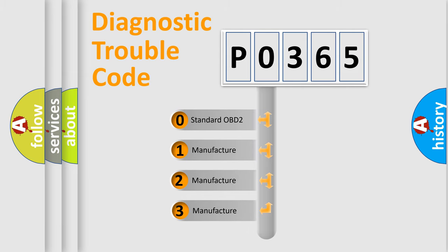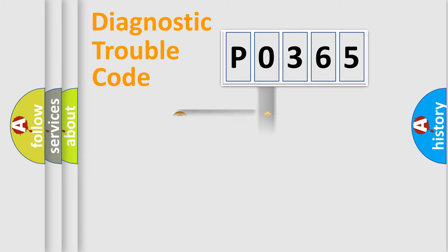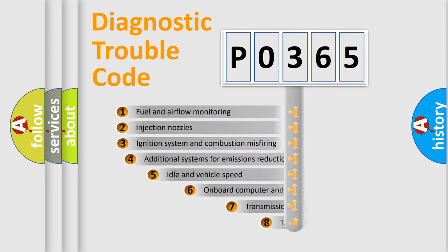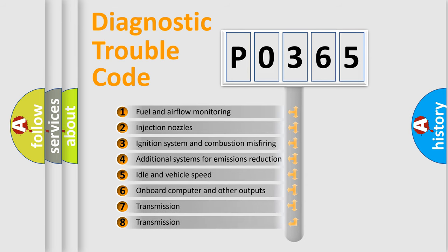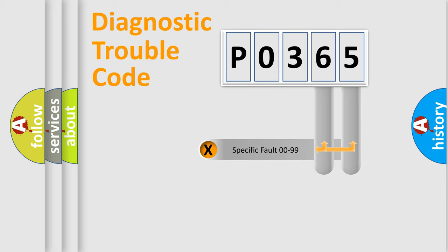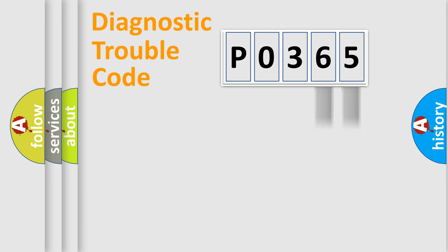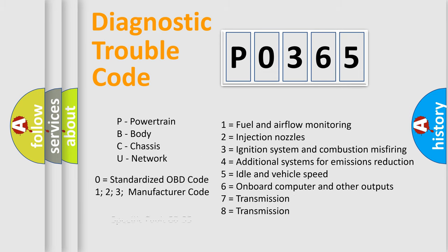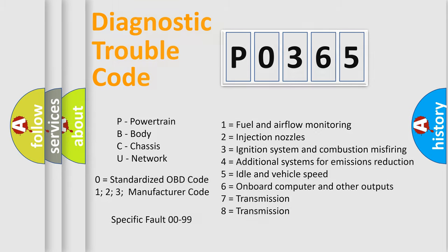If the second character is expressed as zero, it is a standardized error. In the case of numbers 1, 2, or 3, it is a manufacturer-specific error expression. The third character specifies a subset of errors. This distribution is valid only for the standardized DTC code. Only the last two characters define the specific fault of the group, and this division applies only when the second character is zero.